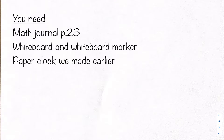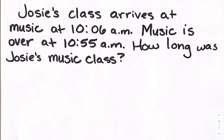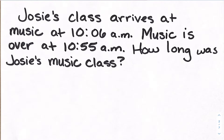Okay, the first thing we are going to do is on our whiteboards, with our whiteboard marker, I want you to answer this question. See if you can solve it on your whiteboard. Josie's class arrives at music at 10:06 a.m. Music is over at 10:55 a.m. How long was Josie's music class? We have the start time and the end time, and I want to know how long that was. So pause the video while you work.